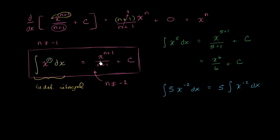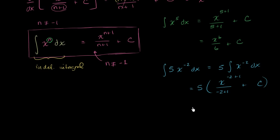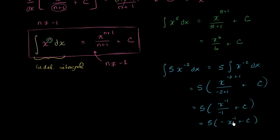Using the anti-power rule, this equals 5 times x to the negative 2 plus 1 over negative 2 plus 1, plus some constant. That simplifies to 5 times x to the negative 1 over negative 1, plus c, which equals 5 times negative x to the negative 1, plus some constant. Distributing the 5 gives negative 5 x to the negative 1.